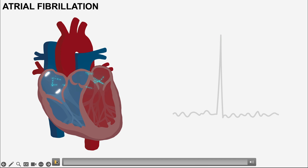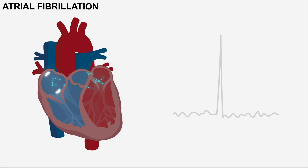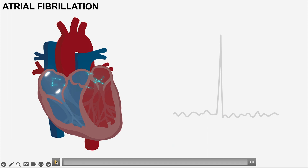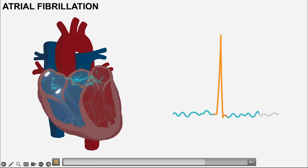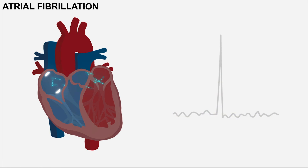In this video we're going to talk about atrial fibrillation. On the left we have a depiction of the heart and the electrical activity through it, and on the right we have one ECG lead showing atrial fibrillation. This is what it looks like, so let's now slow it down and talk about exactly what atrial fibrillation is.